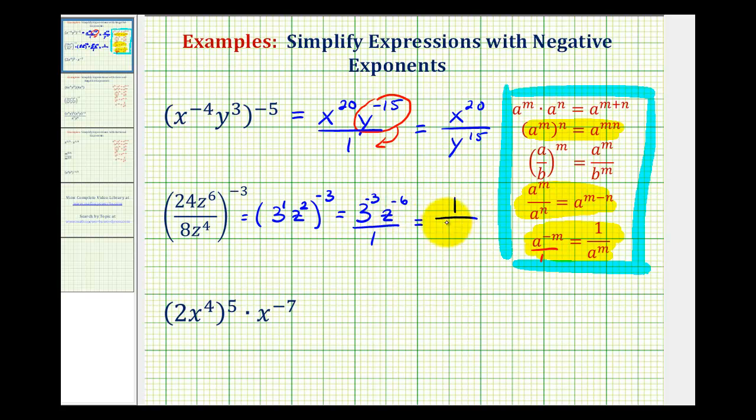And then we'll have 3 to the 3rd in the denominator and z to the 6th in the denominator. And since 3 to the 3rd is equal to 27, we can write this as 1 all over 27 z to the 6th.